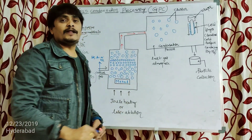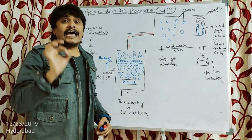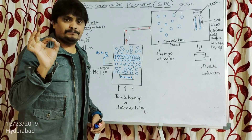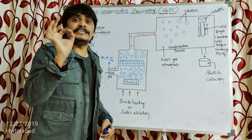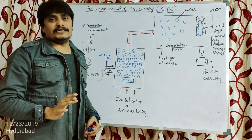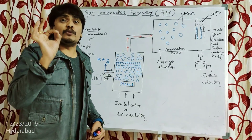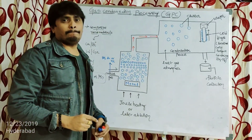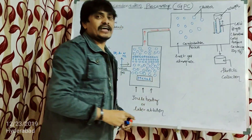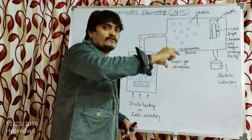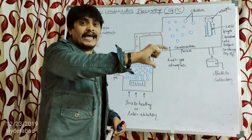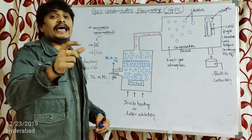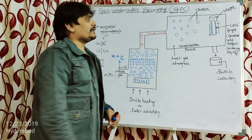A large amount of carrier gas is passed into the chamber and removed by a pump in order to maintain a dynamic vacuum. Under dynamic vacuum conditions, the condensation of the metallic vapors takes place. To maintain this dynamic vacuum, we continuously pass the carrier gas into the second chamber, and the pump removes it continuously.